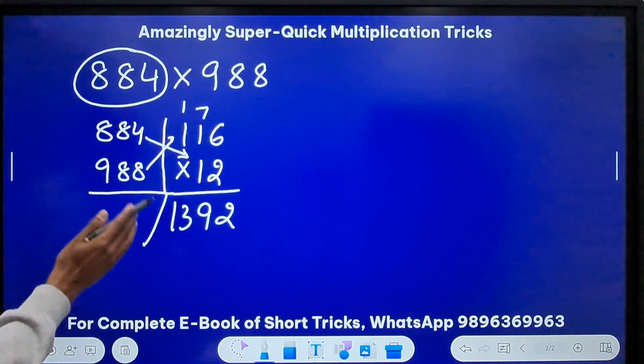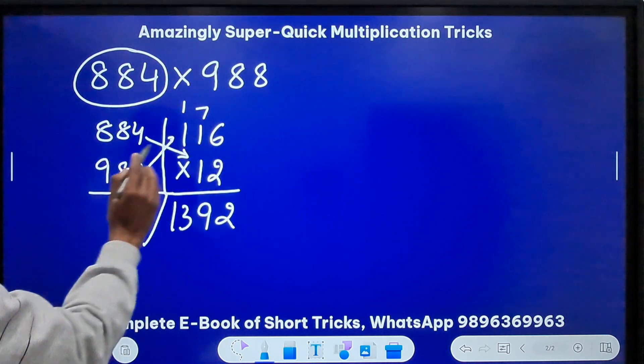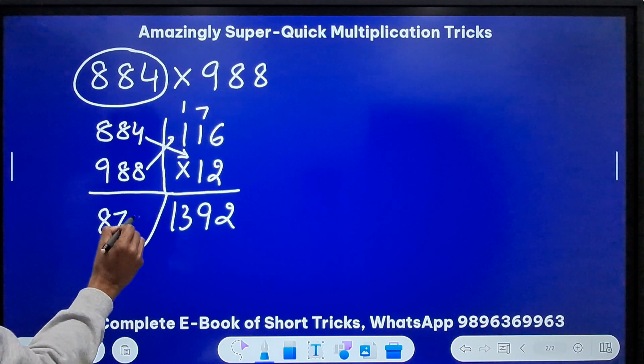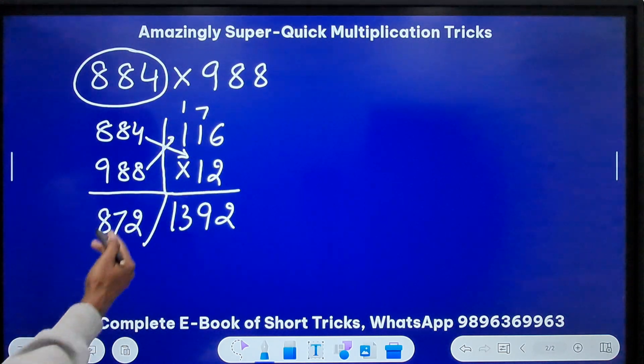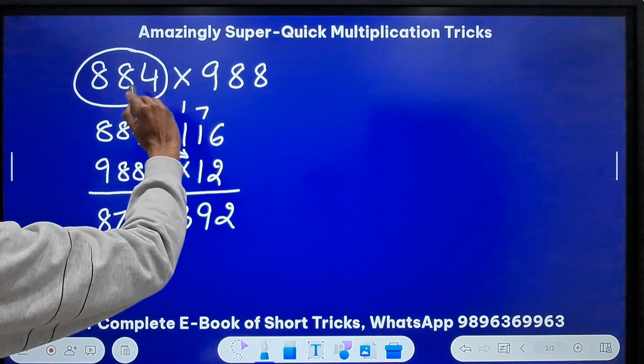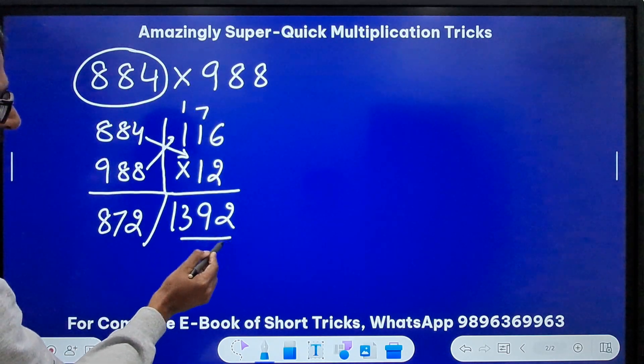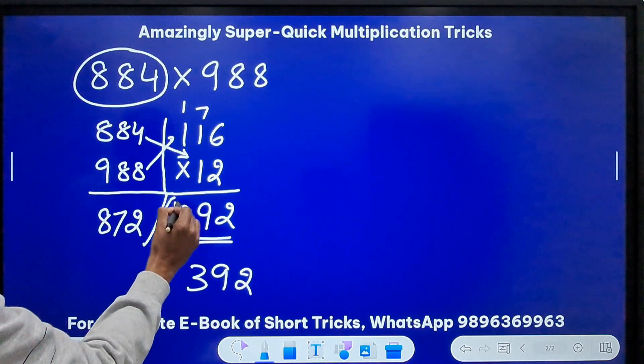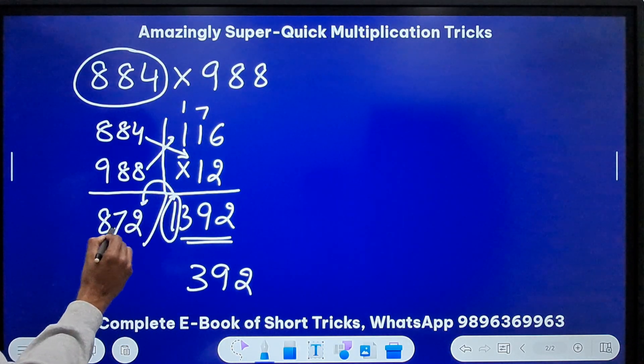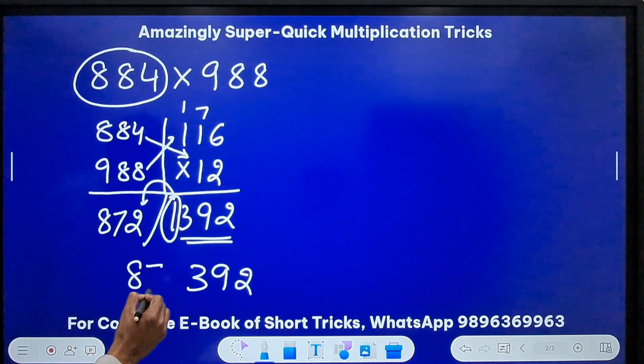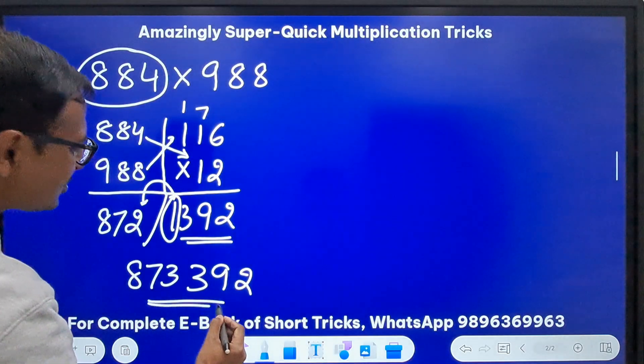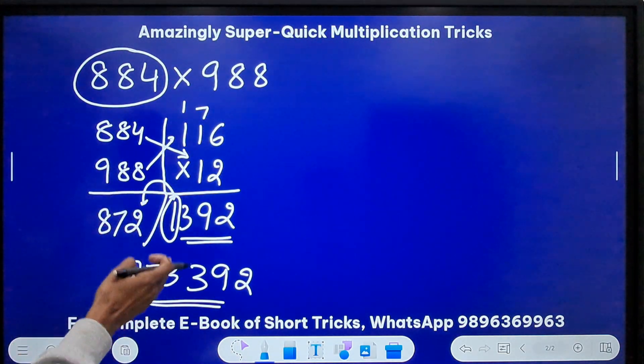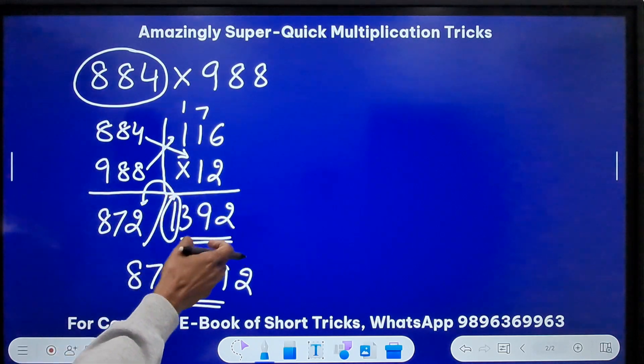I have my answer now. Because they are close to 1000, I will take three digits from here: 392. And this one I will carry forward, and this 872 becomes 873. So again you can pick up the calculators. 873392 is the answer.